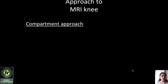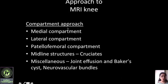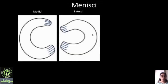In order to look at the MRI knee scan, you can use the compartment approach, which comprises: first the medial compartment, followed by the lateral and patellofemoral compartment, then the midline structures — that is the cruciate ligaments — followed by miscellaneous structures like joint effusions, Baker's cyst, and neurovascular bundles. If you follow this compartment approach you won't miss anything.